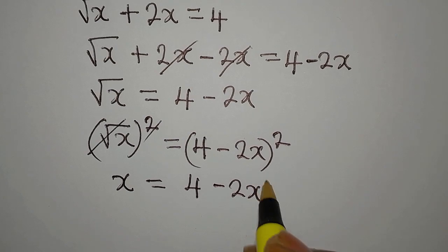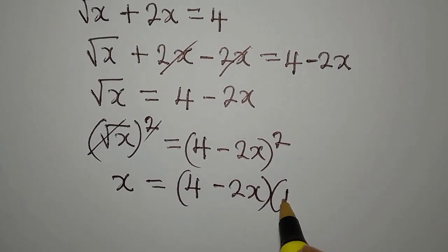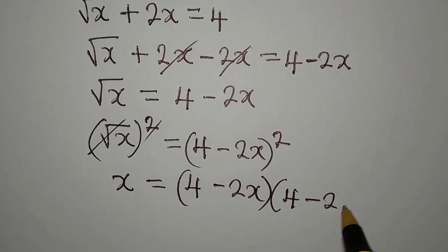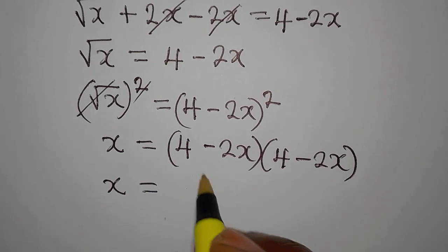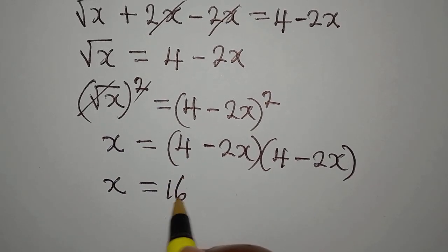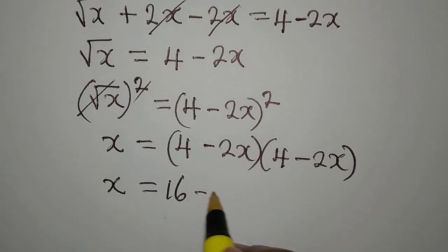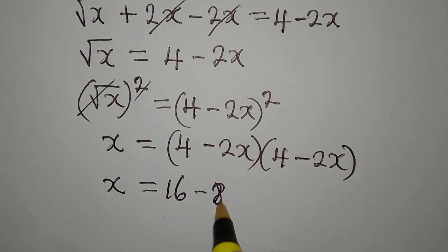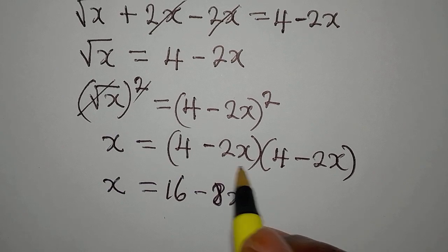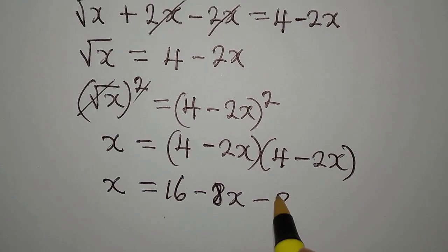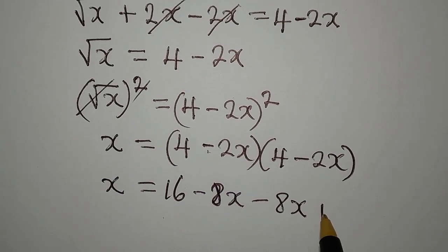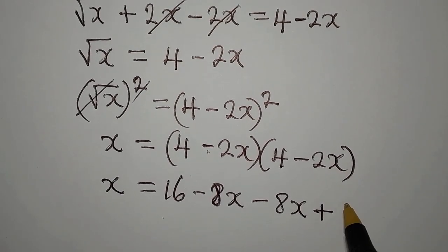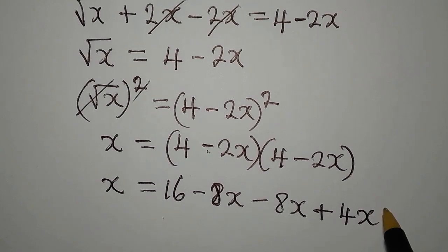So x now is 4 times 4 is 16, 4 times minus 2x is minus 8x, 2x times 4 is minus 8x again, then negative times negative is positive, 2x times 2x is 4x squared.